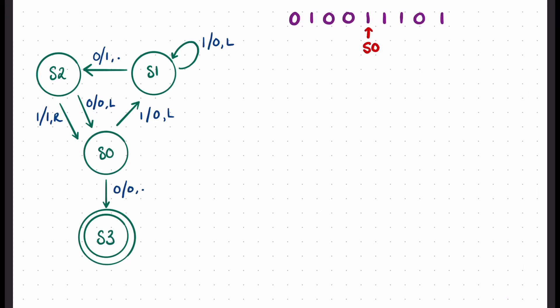In this example I've mixed things up a little - I've used some different notation so that you're used to the idea that these diagrams are not always going to look the same. On the left you can see the Turing diagram with states 0 through 3, where 3 is the halting state indicated by the double line around the circle. The notation has slightly changed - instead of brackets I'm using a forward slash and a comma. The first item is what we read, the second is what we write, and the third is the direction we move. Other than that, we just follow the arrows as normal.